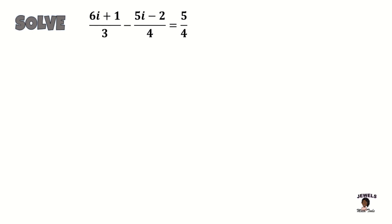In our equation today, we're going to begin by first finding our LCD. Remember that whenever you're working on questions with fractions and we're adding or subtracting, we're still going to apply the same rules as with basic fractional questions. Because our denominators are different, we're going to first have to find our LCD of 3 and 4. Looking at our 3 and 4 times table, the multiple they both have in common is 12. So now we're going to change our fractions to their equivalent form where all of them have a denominator of 12.